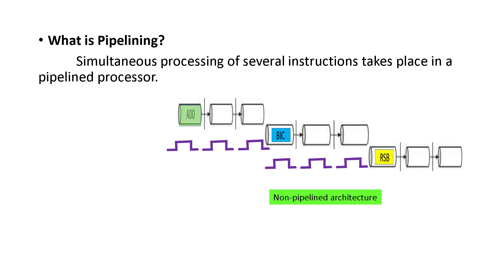Before going to see what is pipelining, we will see how instructions are executed normally. For example, we take this add instruction, which will add the contents of two registers. When the processor processes this instruction, it will be done in different stages. In the first clock cycle, the opcode of the instruction is fetched from the memory.